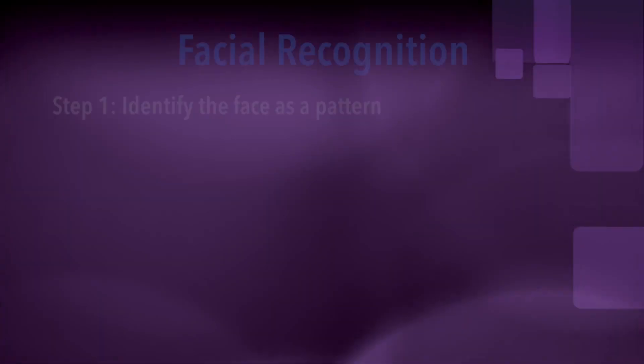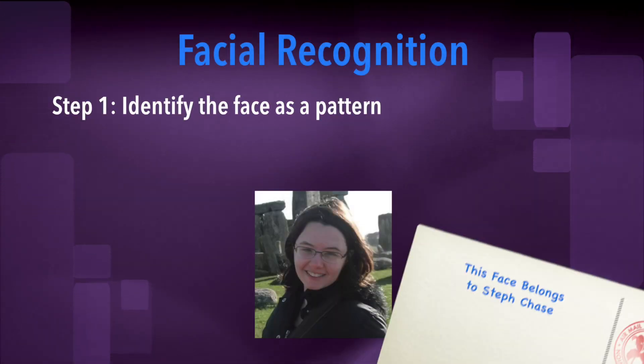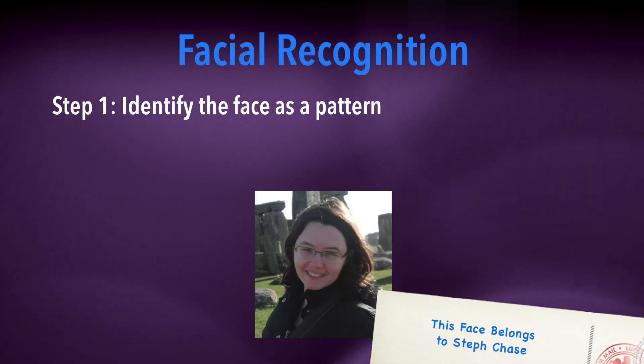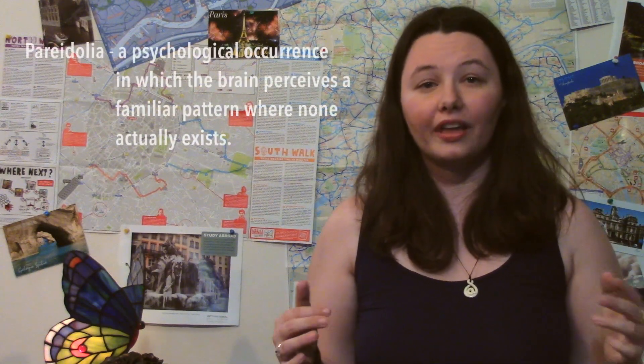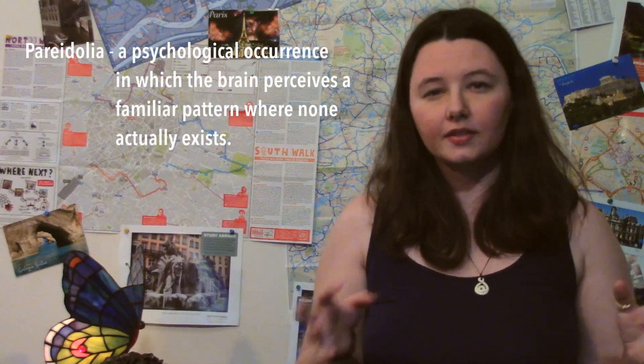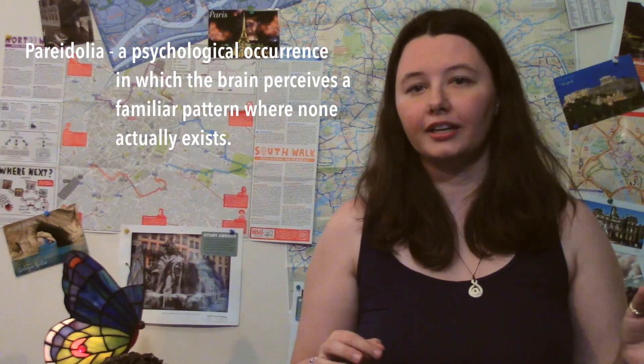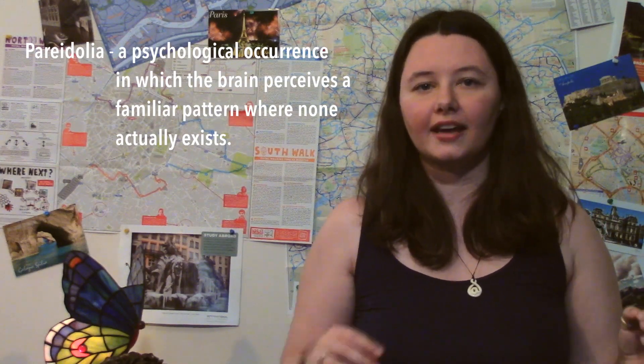I'm going to start today's episode with a highly abridged explanation of how humans recognize faces. I explain it this way because it helps the neurotypical to understand challenges the face-blind community faces. First, you identify the face as a pattern. People are generally good at this — so good, in fact, that we tend to find faces in patterns where they are not meant to be. This is called pareidolia, and it's how you get such things as...